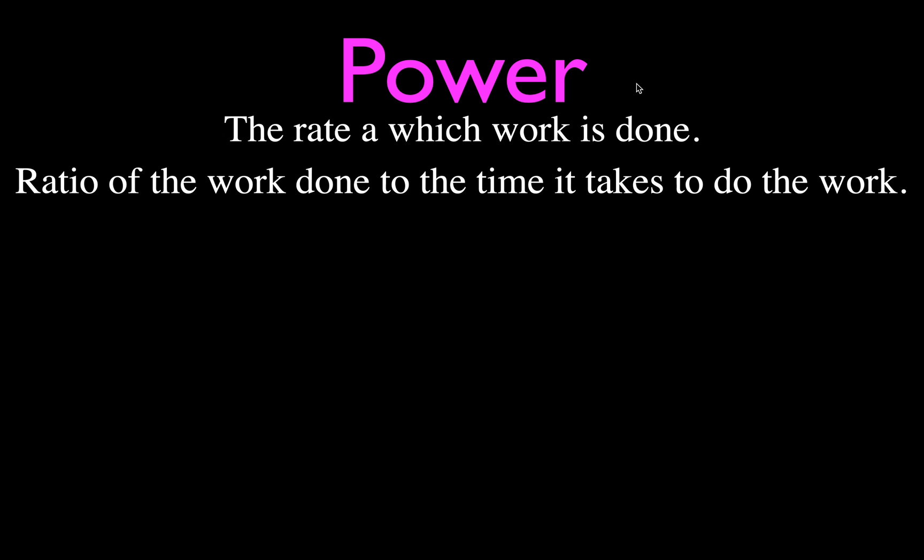So what is power? I found three different definitions. The one you see in your textbook most is that power is the rate at which work is done — rate means time. A more specific mathematical definition is that it's the ratio of the work done to the time it takes to do the work. The easiest way to think about it is simply how fast work is done. If you can do a lot of work in a short period of time, you would be considered very powerful — you'd have a higher power output.